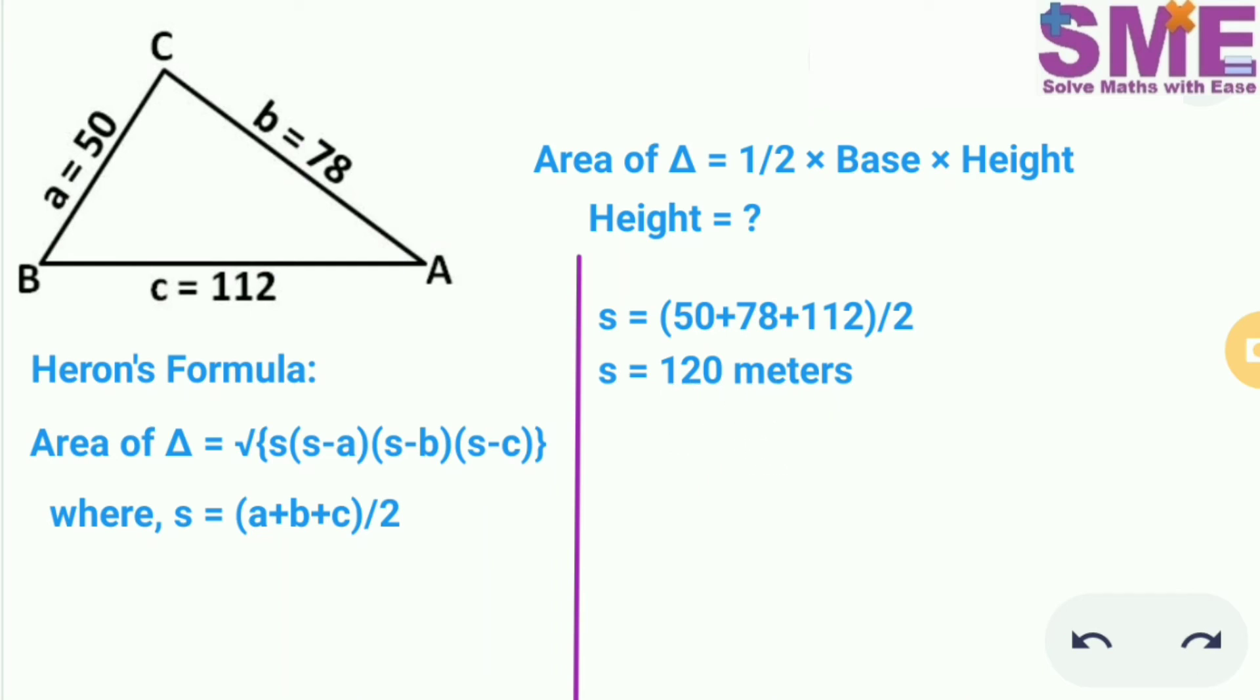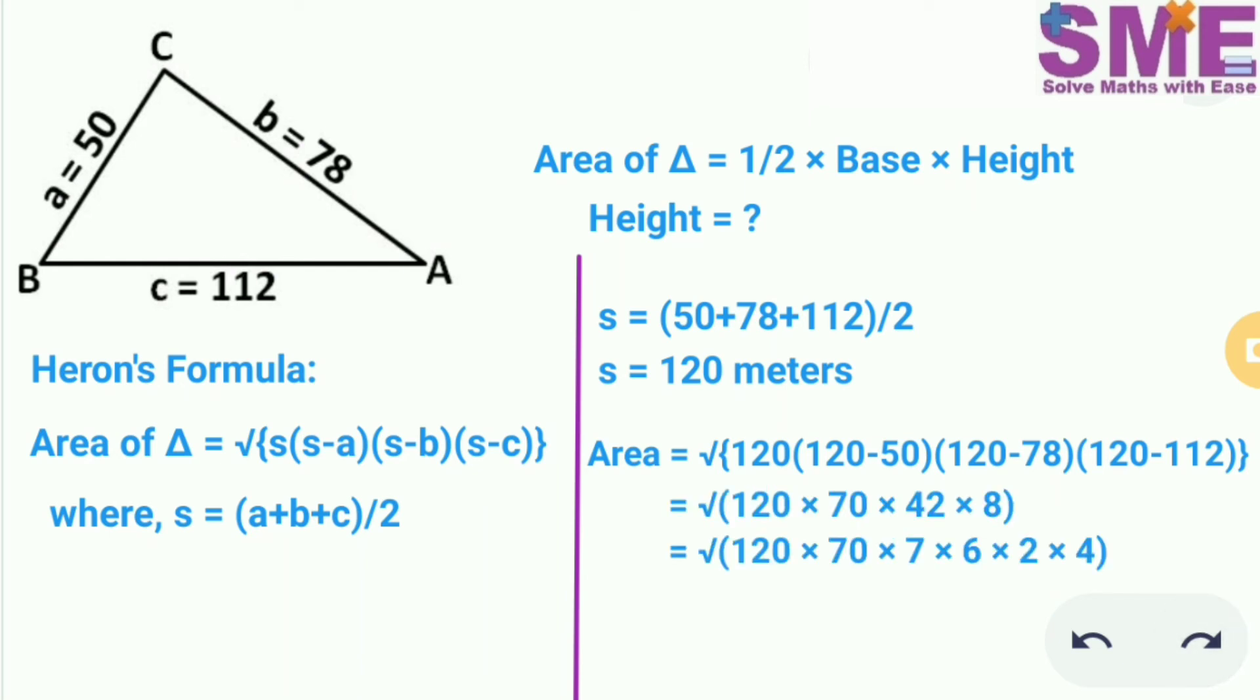Now we will put the value of s and the value of 3 sides in this formula to get the area. So we will further simplify this. So we get the area of the triangle as 1680m².